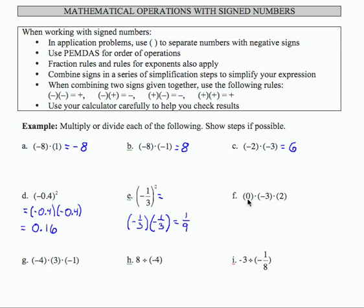In part F, I have the product of three numbers. I can only multiply two things at a time, so I'm going to start with the first two. 0 times any number is 0, so that leaves me with 0 times 2, and 0 times 2 is 0.